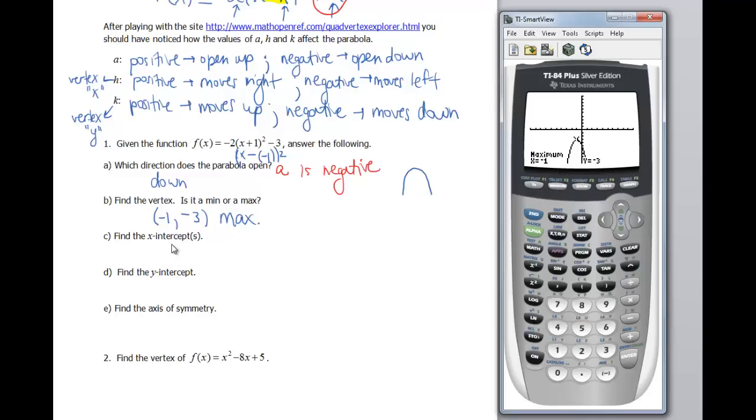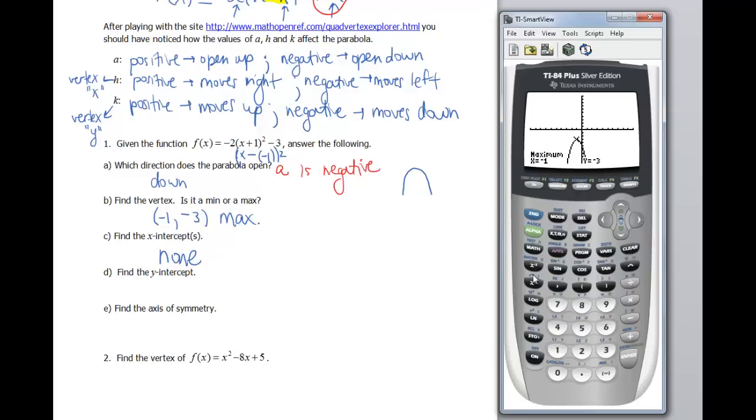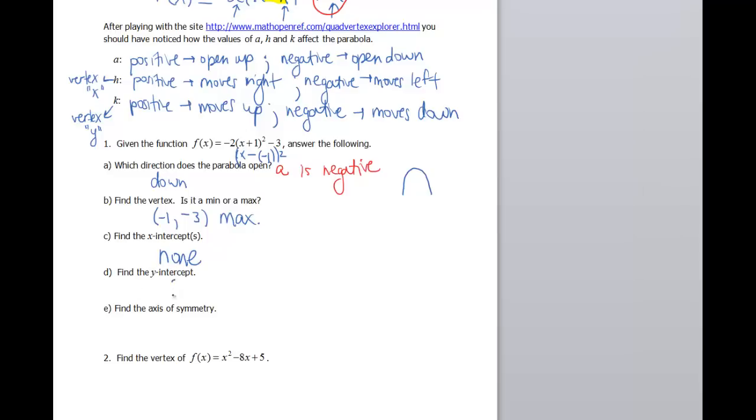Next question says find the x intercepts. So where does this graph cross my x axis at? Looking at the graph, it doesn't. So there are none. Where is my y intercept at? Let's bring that graph back up. It's kinda hard to tell here. So I'm gonna take a look at my table. So second table. My y intercept means I want my x to be 0. My x is 0 at negative 5. So that's gonna be the point 0, negative 5.